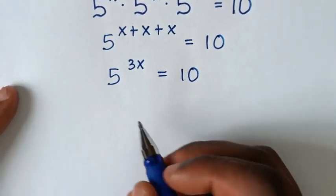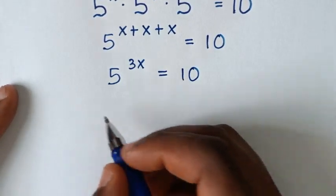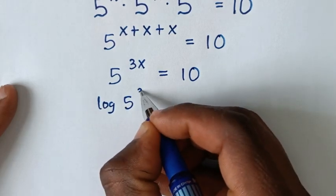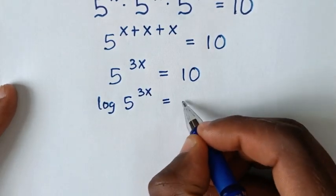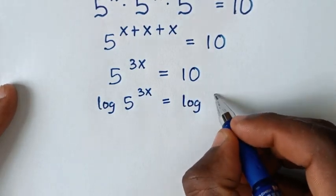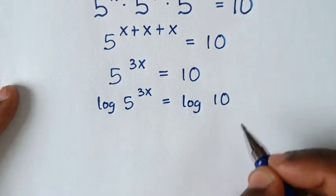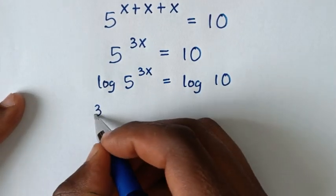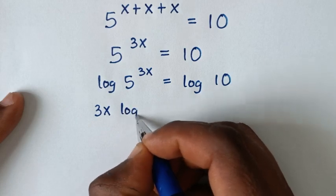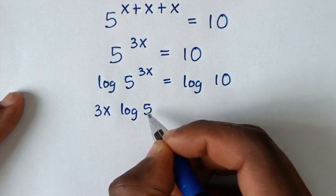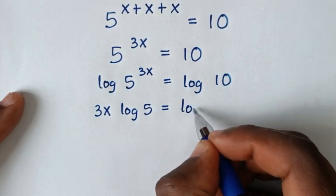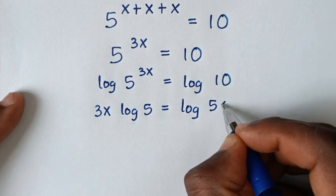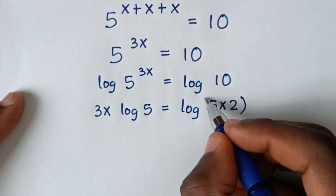From here we'll apply log on both sides, so it will be log of 5 power 3x is equal to log of 10. Then this power of 3x will move to the front, so it will be 3x times log of 5 is equal to log of 10. Now 10 is the same as 5 times 2.